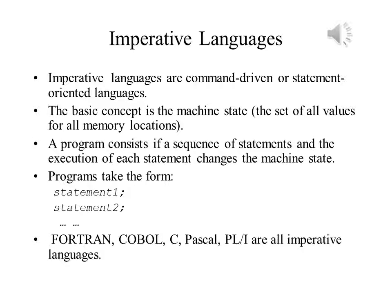Imperative languages give a series of commands to the computer, telling it what to do in gory detail. They are based on the concept of a machine state — knowing the values stored in all memory locations relevant to the program. Imperative languages allow for some structure, including if-then-else constructions, loops, and even sub-program calls. Most popular non-object-oriented languages are imperative, including Fortran, COBOL, C, and so on.